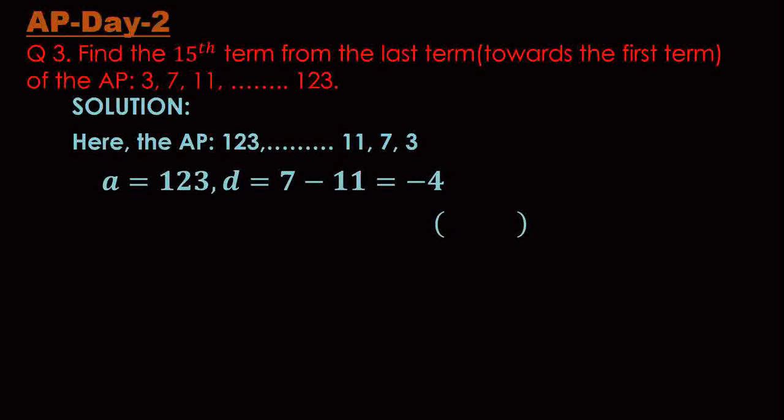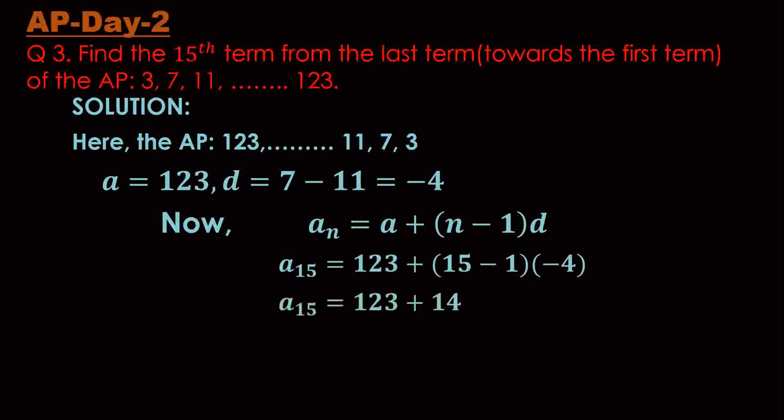Now we have to find the 15th term, so let's write the formula of the nth term once: aₙ = a + (n-1)d. So a₁₅ = 123 + (15-1)(-4). So a₁₅ = 123 + 14×(-4). The rest of the steps are simple I hope everyone will be able to understand.